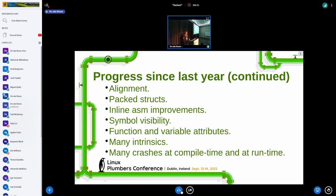Other things that we implemented last year, we improved the support for setting the alignment. We now support packed structures. We made many improvements to inline assembly, and we now support symbol visibility. We support a few function attributes, and we implemented many Rust intrinsics and SIMD intrinsics, and there were many crashes both at compile time in libgcc or at runtime that were fixed.